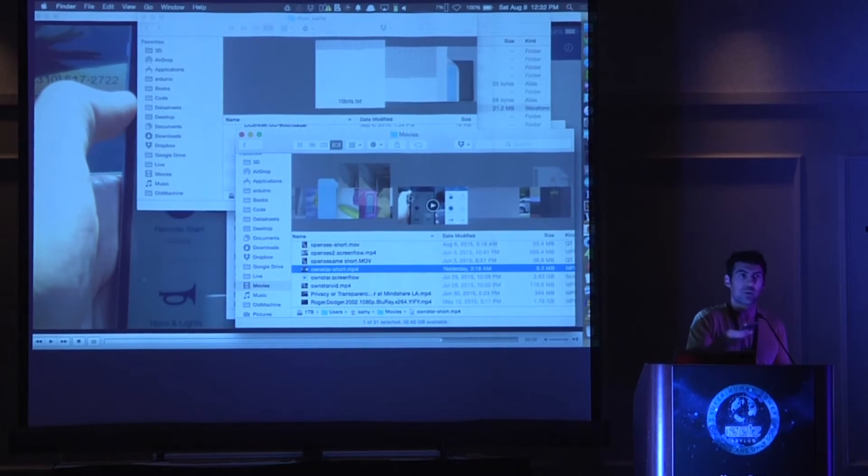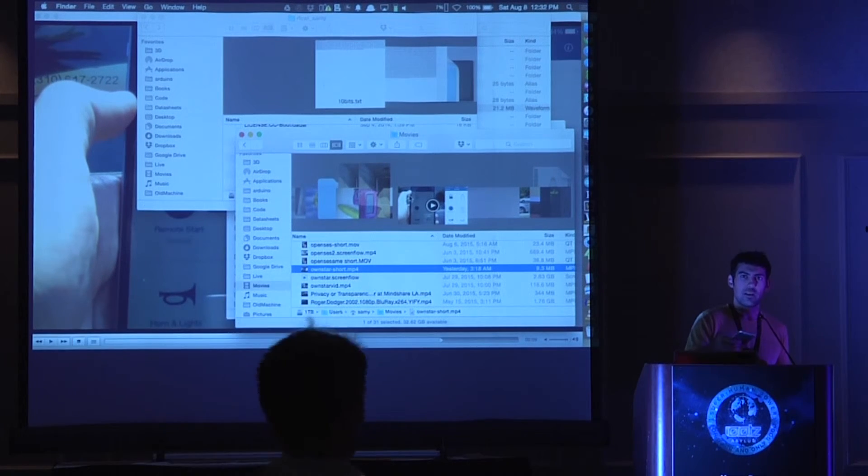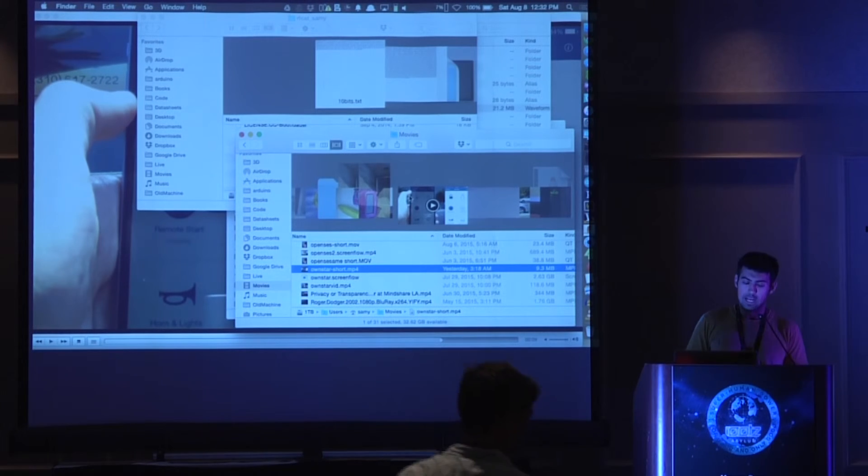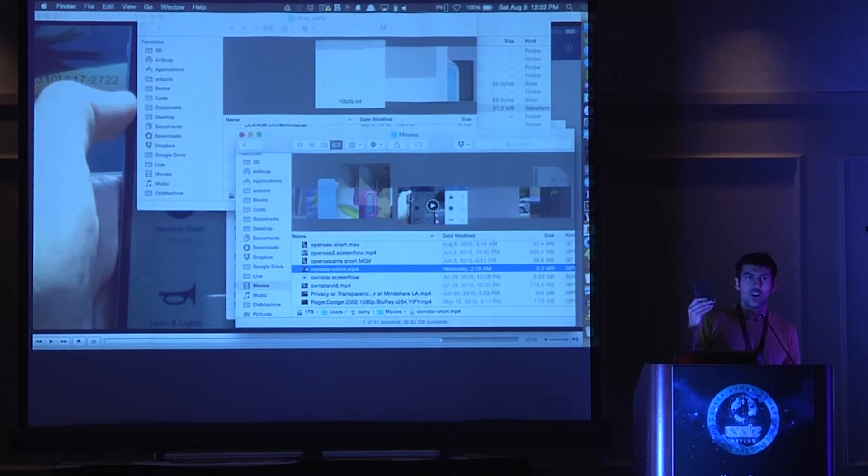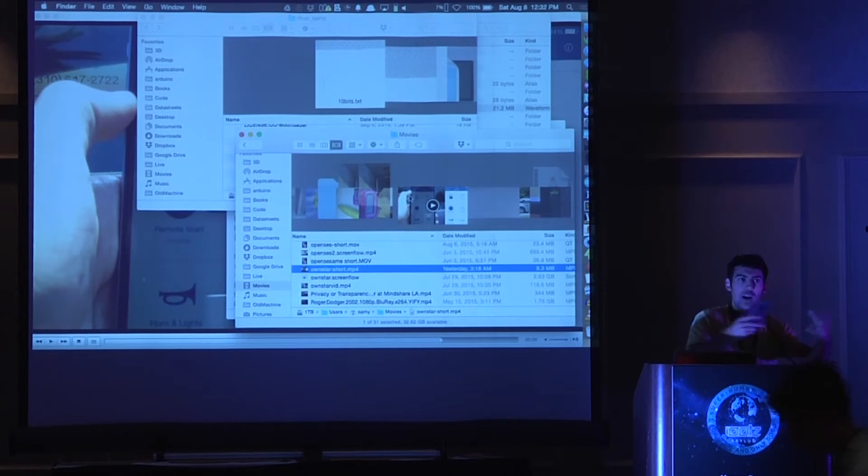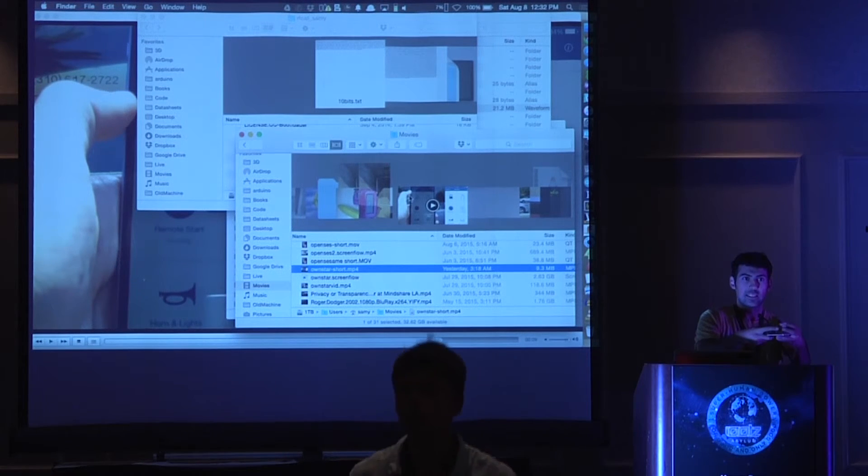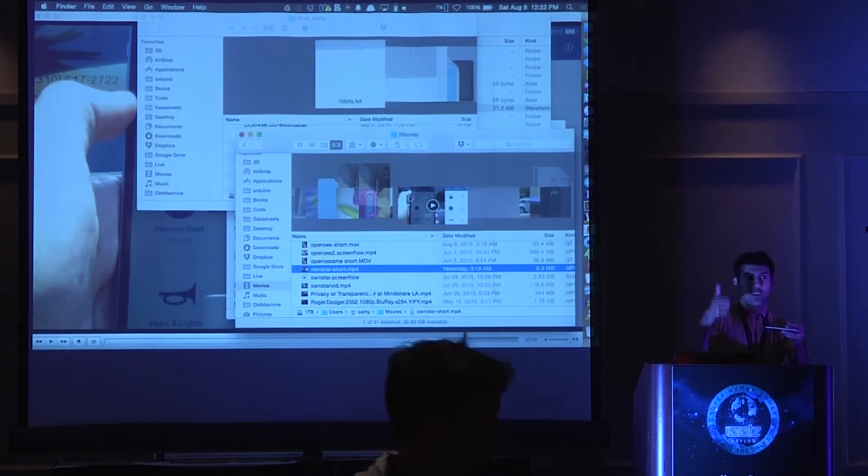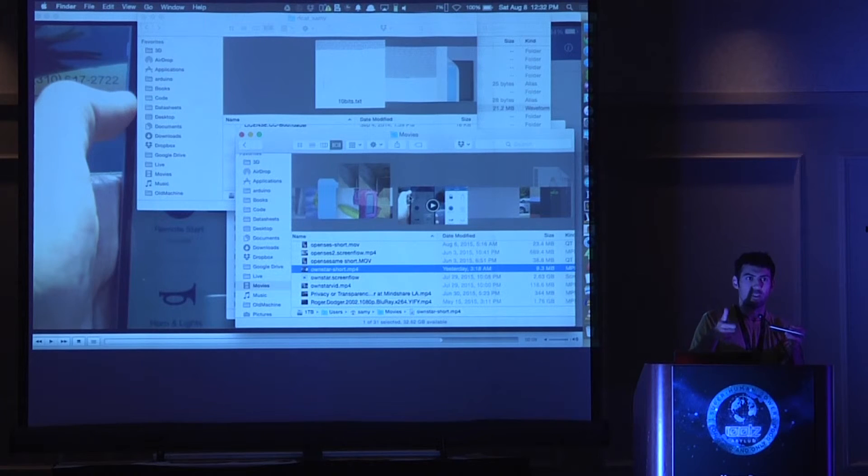My home network at home is called Red House. So whenever my phone goes anywhere, it says, hey, is there a Red House here? The box detects that, the OnStar box detects that, the device I created. And it creates a network called Red House. So it pretends to be the network at my house. That makes the person's phone, whoever owns the car, jump onto my Wi-Fi network. From there, I actually intercept all traffic. I do a man in the middle attack.